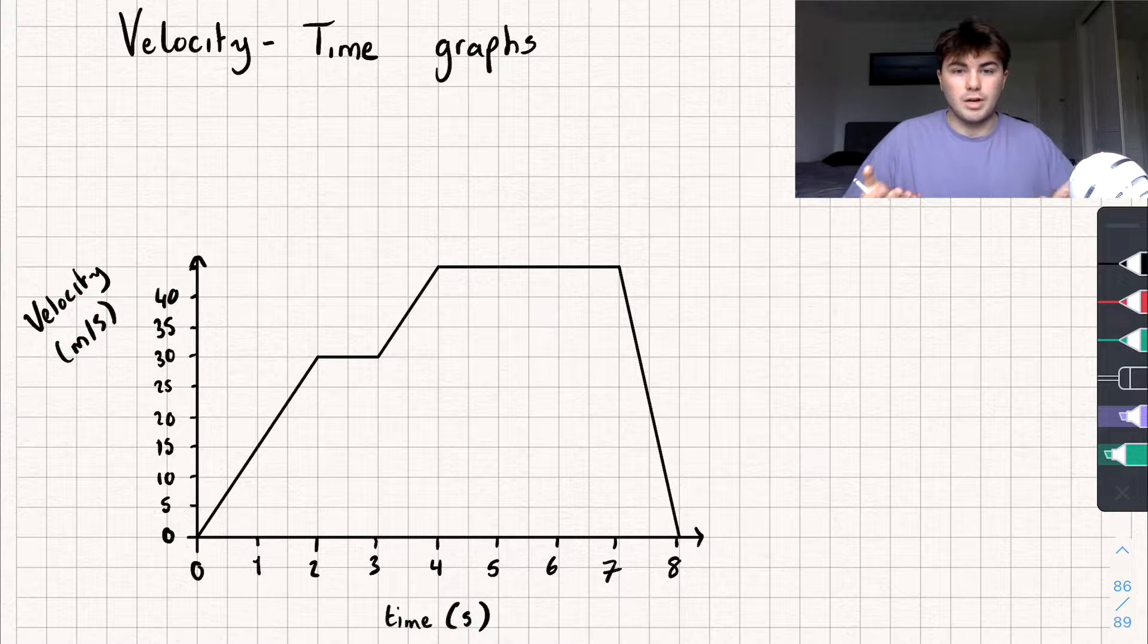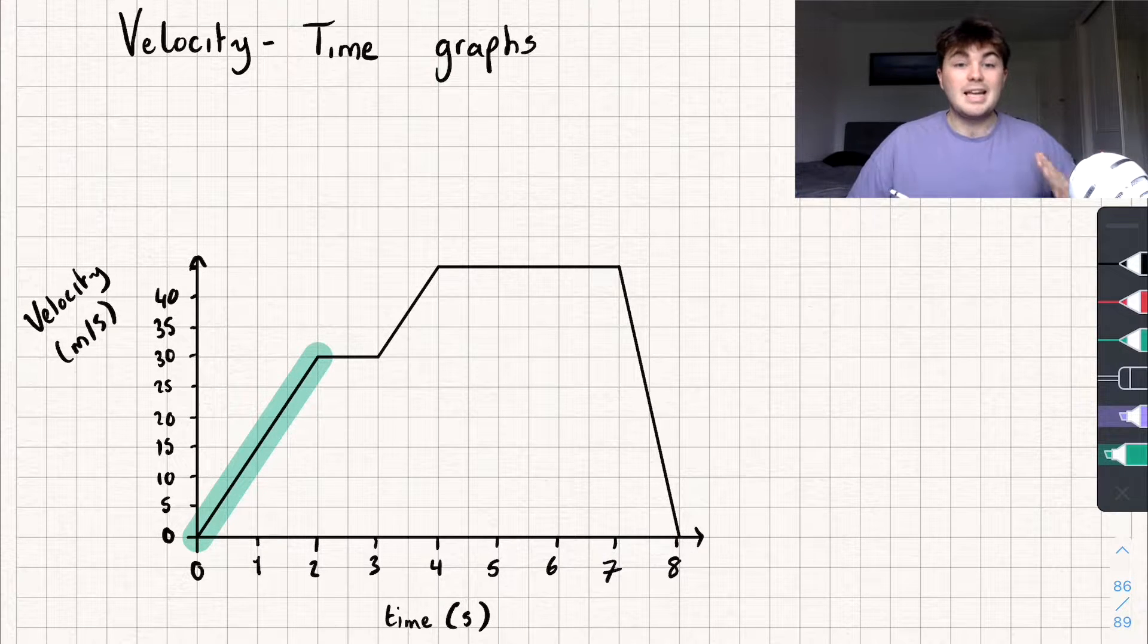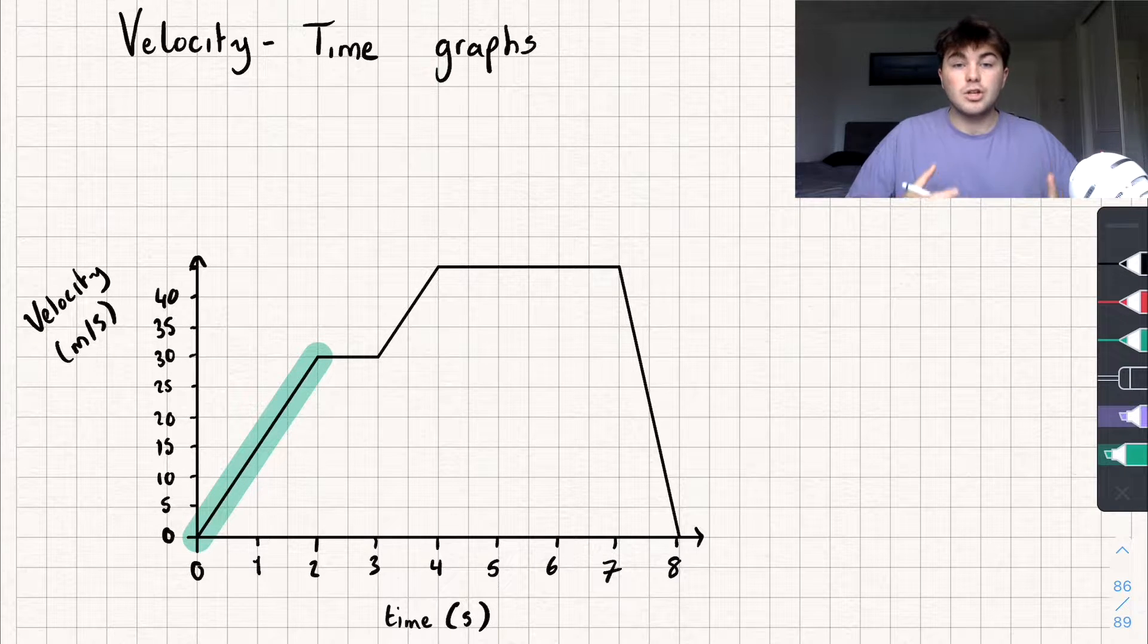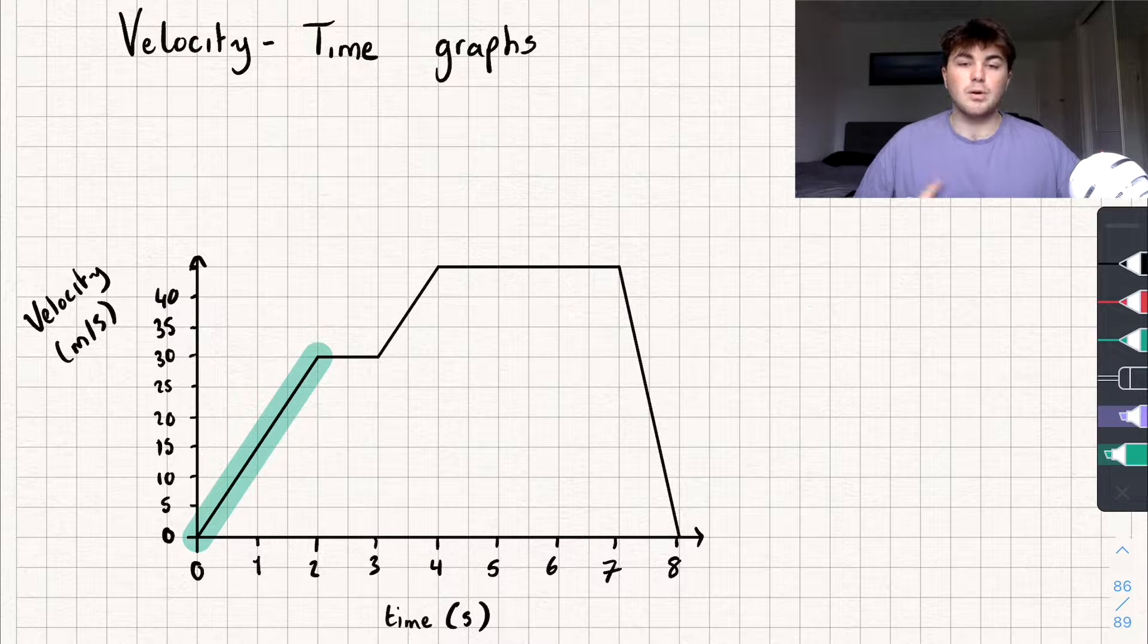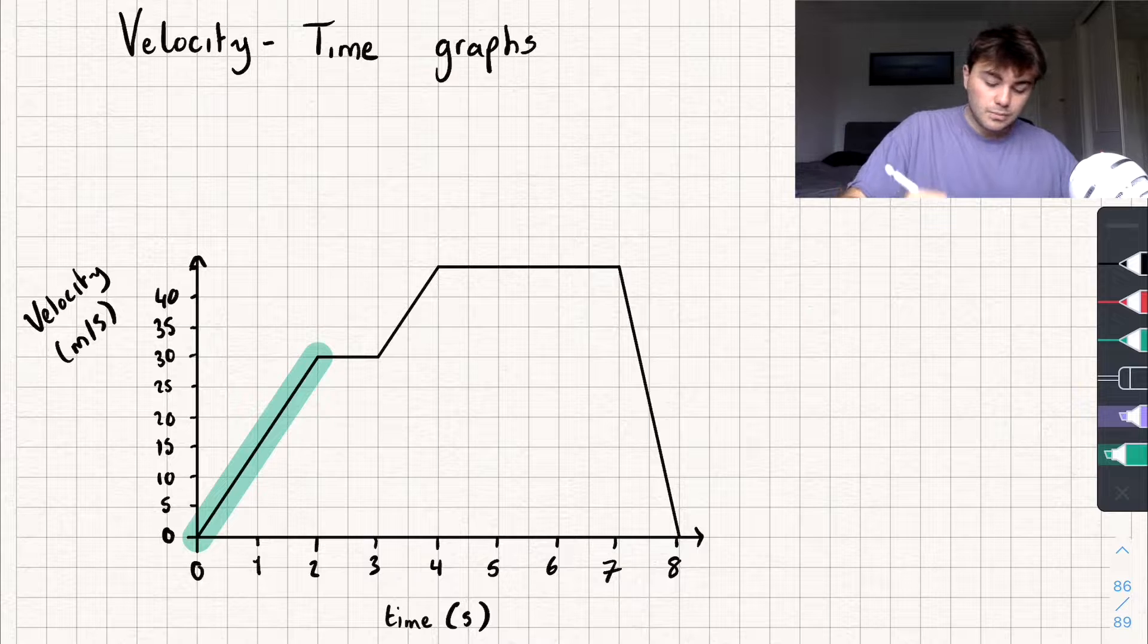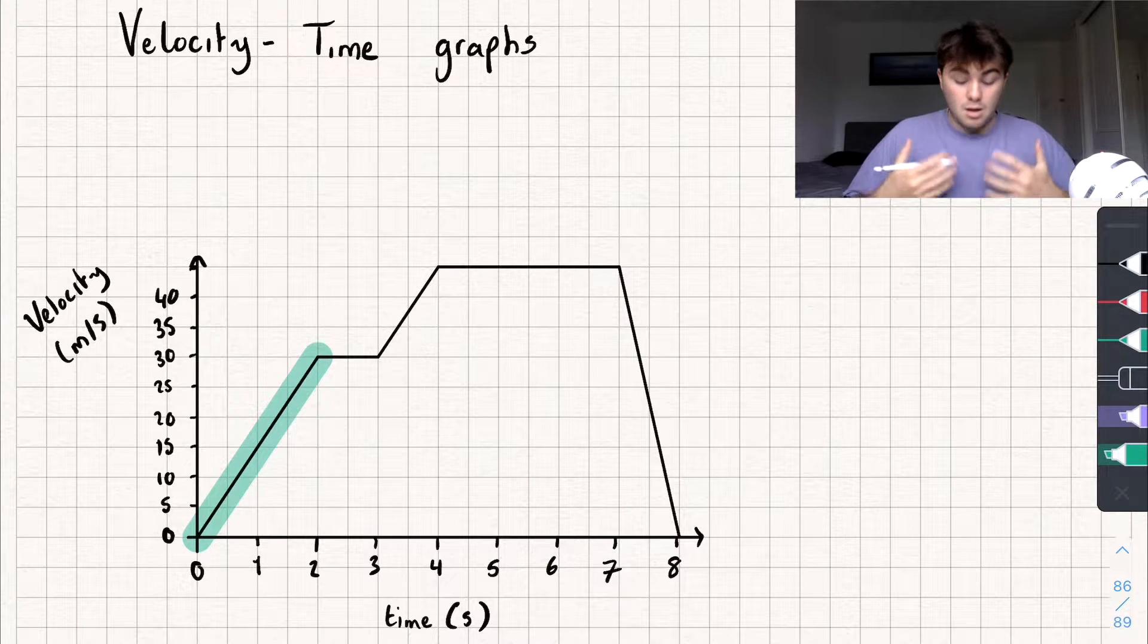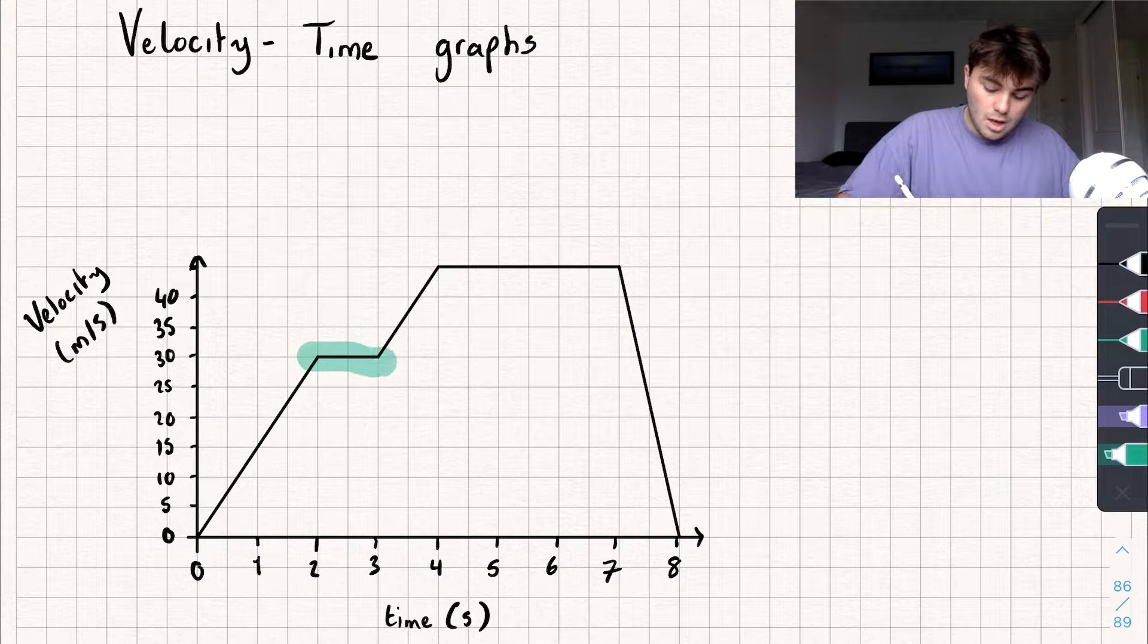So let's take a look at how we read or interpret this graph. If I've got a positive or an increasing gradient, so a positive gradient line like this one I've highlighted, that shows me that I'm accelerating. My velocity is increasing. So you can see between 0 and 2 seconds, my velocity increases from 0 to 30 metres per second. And the steeper that line is, the faster I'm going to accelerate, the quicker my velocity is going to get to wherever I want it to go.